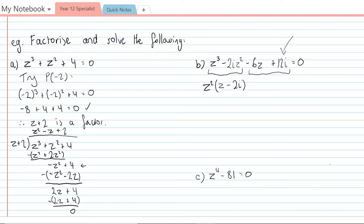I've got a common factor in the next part of negative six. So I'm going to take that negative six out and then I'm left with z minus 2i again.